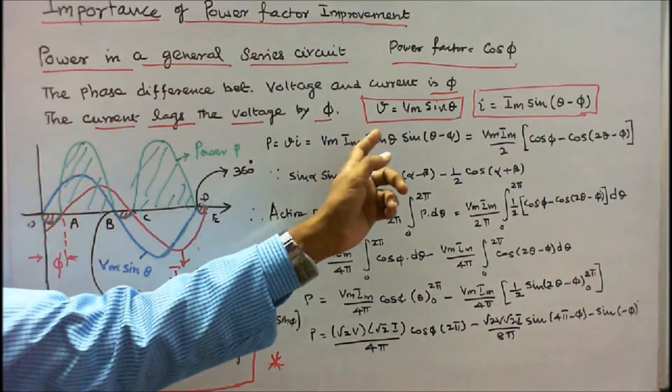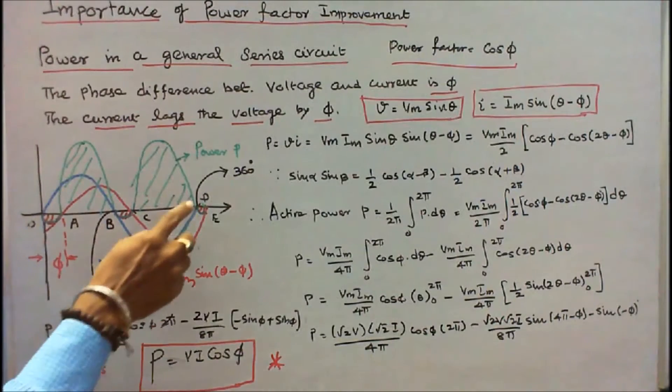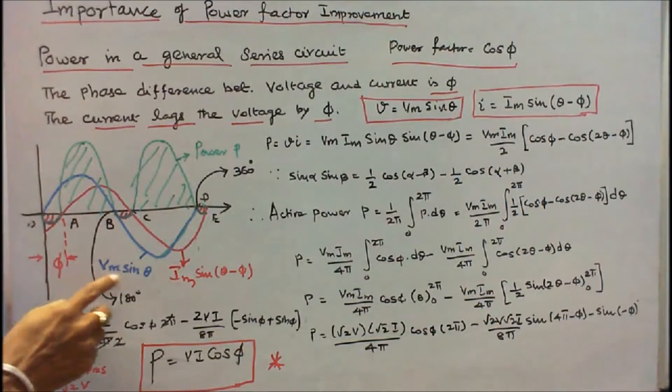Instantaneous voltage V is equal to Vm sin θ. The blue color waveform is a voltage waveform Vm sin θ.